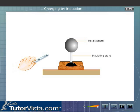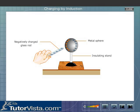Bring a negatively charged rod near it without touching the sphere. The free electrons in the metal sphere are repelled by the excess of electrons on the rod and they shift away from the rod.